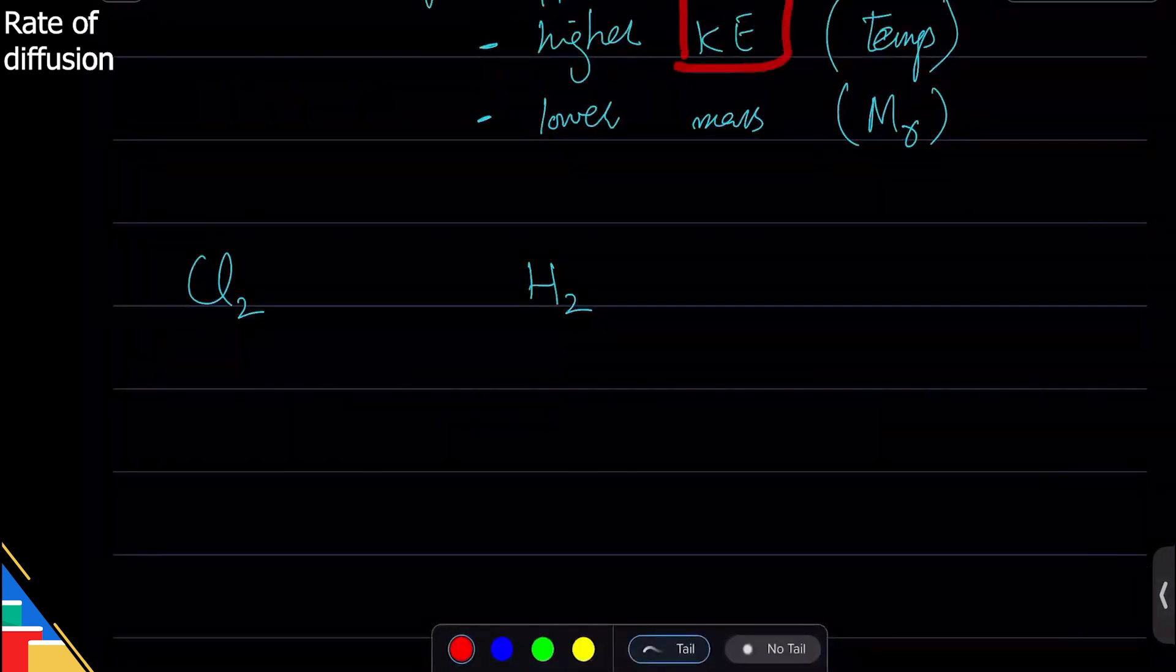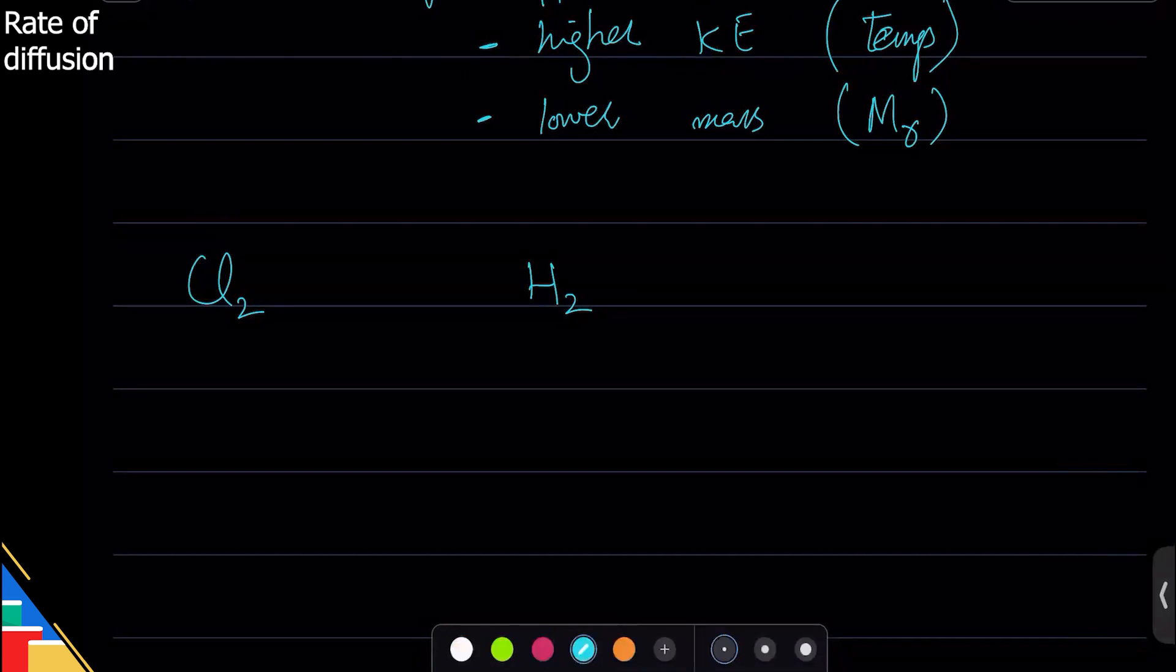If they're at the same temperature, remember temperature changes kinetic energy which changes the rate of diffusion. So if they're at the same temperature then their speed of diffusion or rate of diffusion does not depend on temperature because both the same.